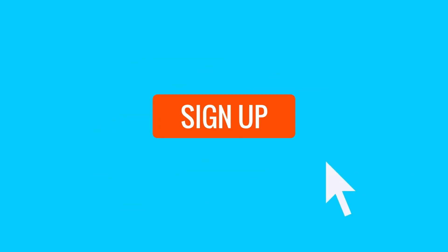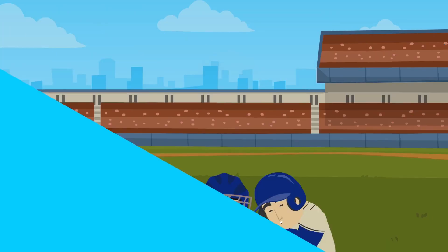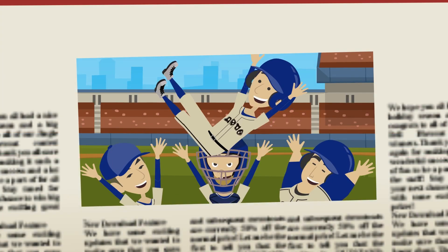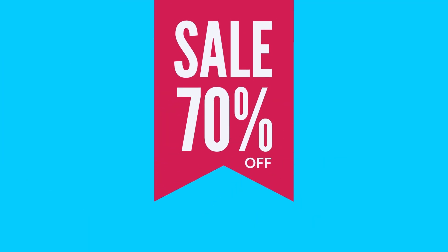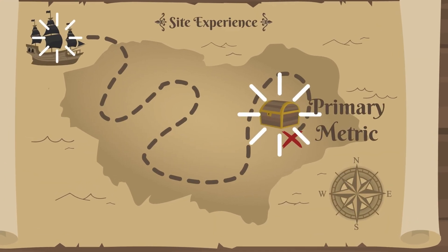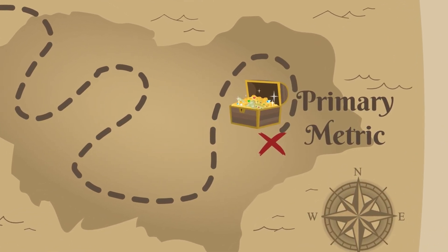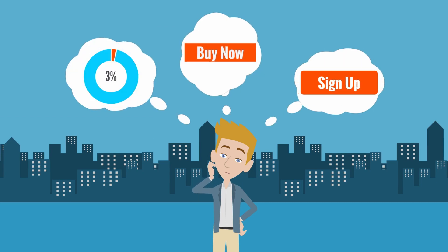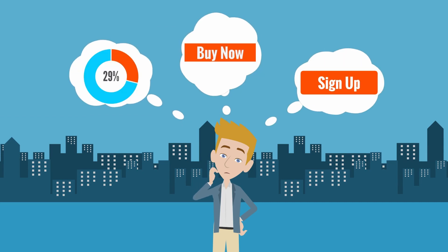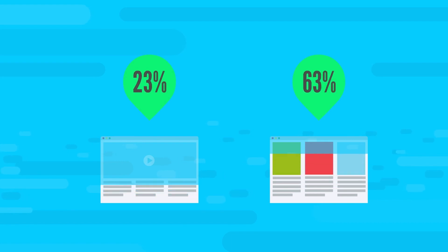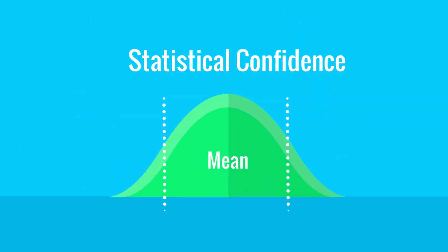If you're trying to get leads, then your primary metric would be signups. For many sites, the primary metric is content consumption or time on site if they're trying to display ads. Your ultimate goal is to get your visitors to do more of the thing you want them to do. Whatever your primary metric is, whatever the goal of your site is, you need to determine that before the test is run. Then once you have enough data, you can calculate the lift and the confidence to see which of the variations did better.